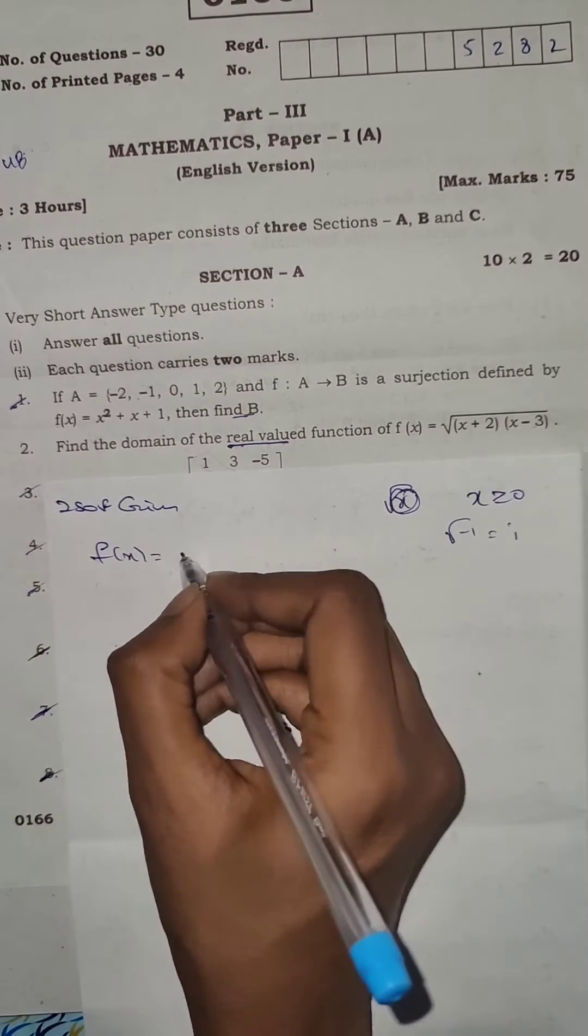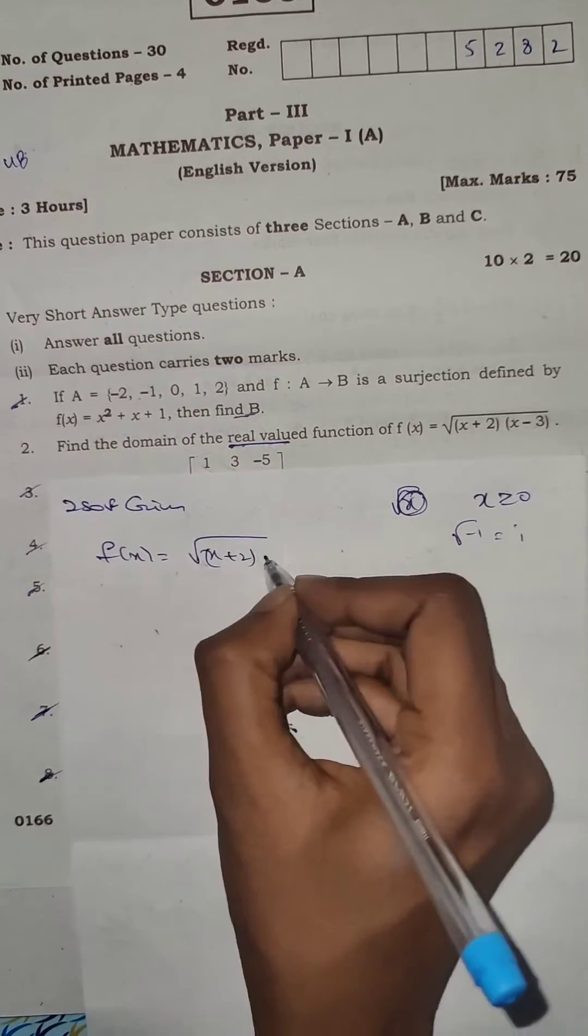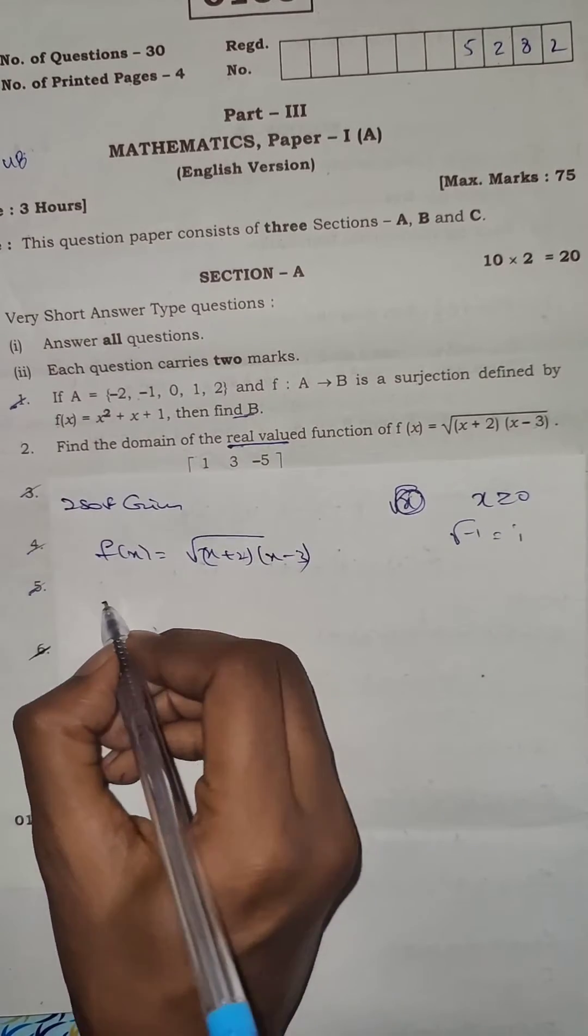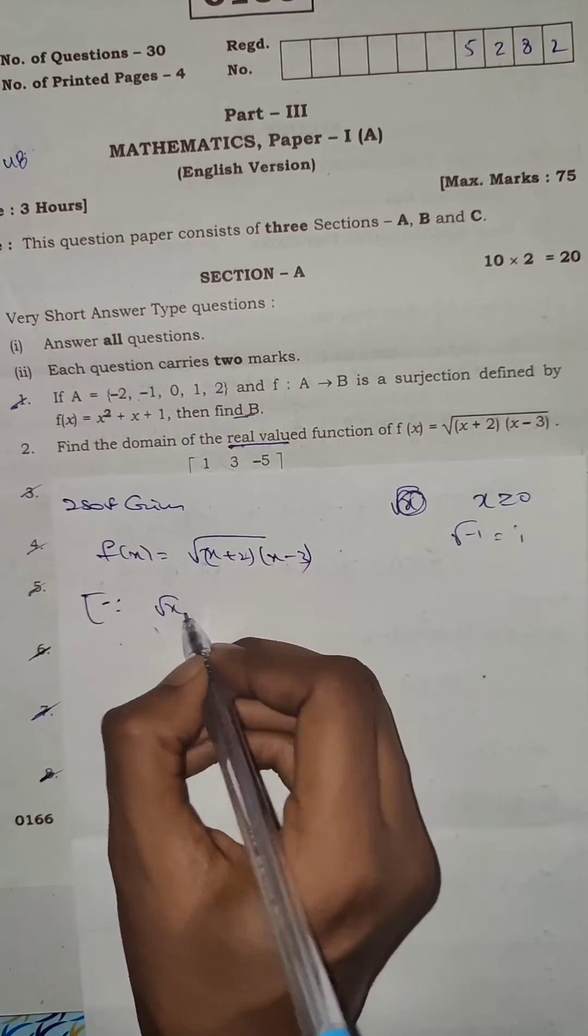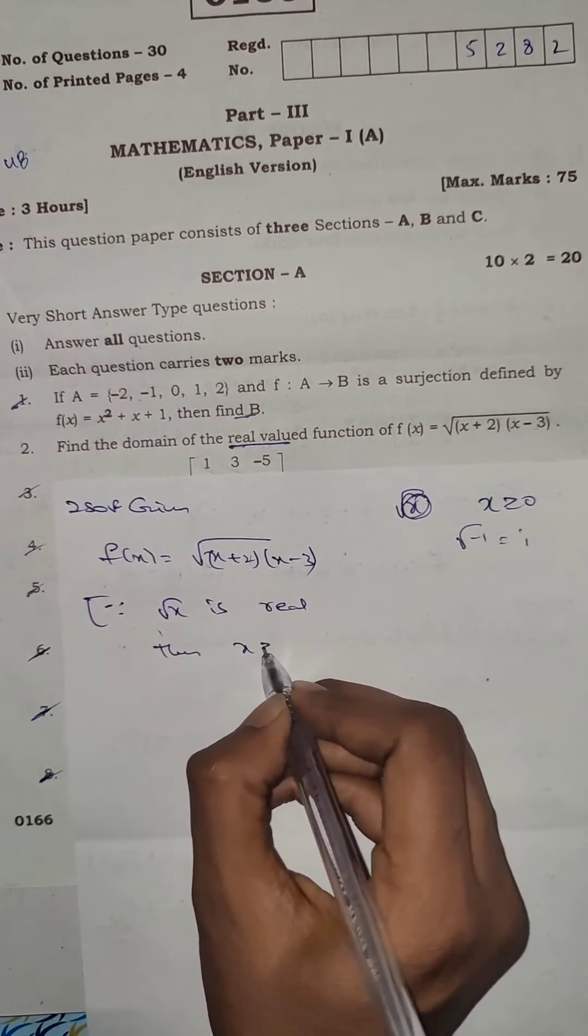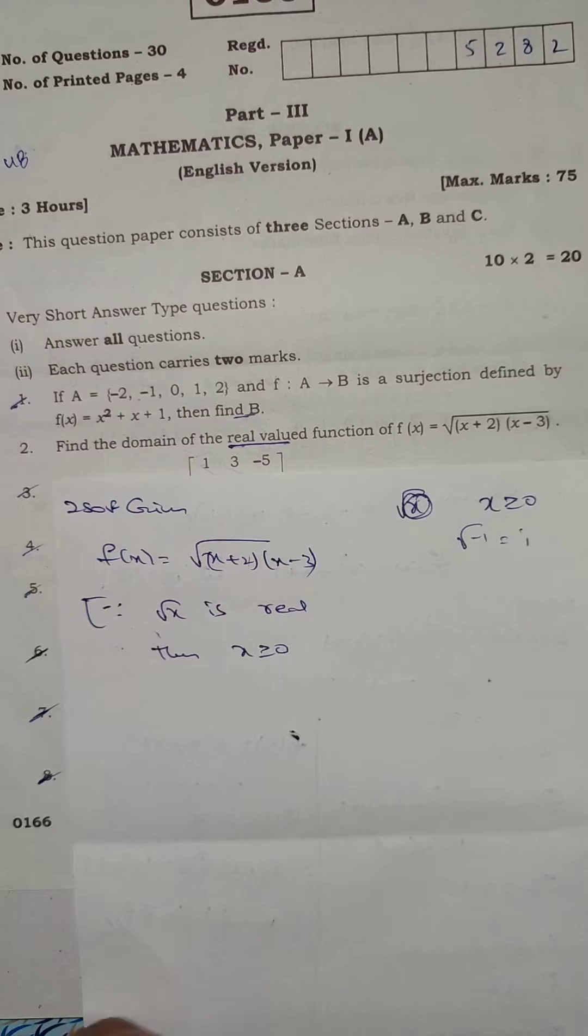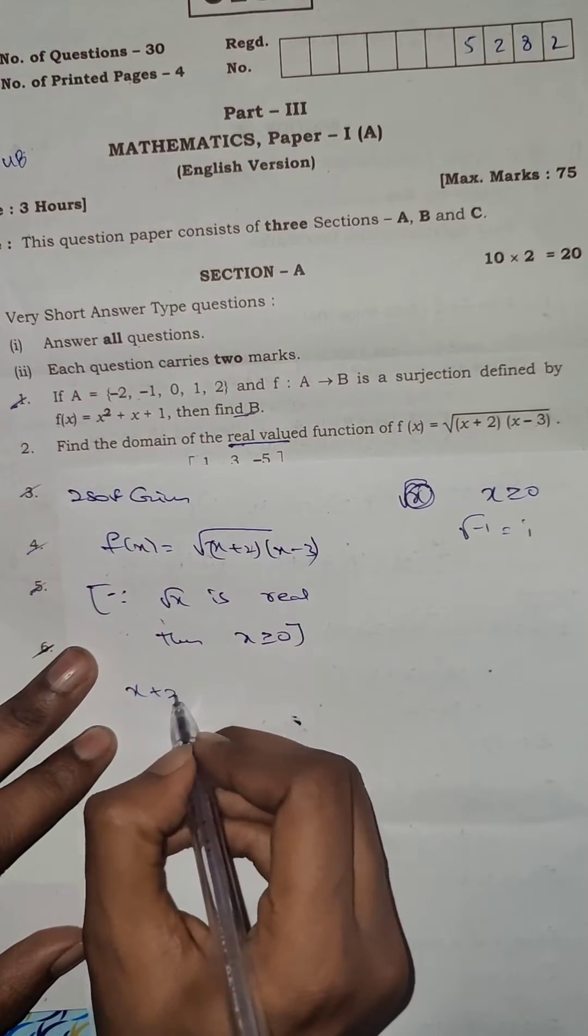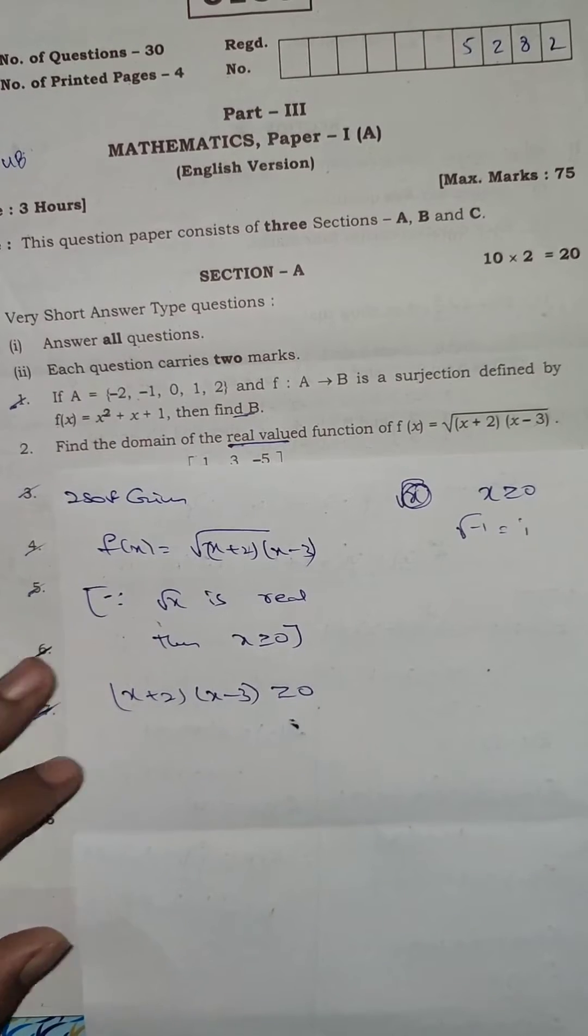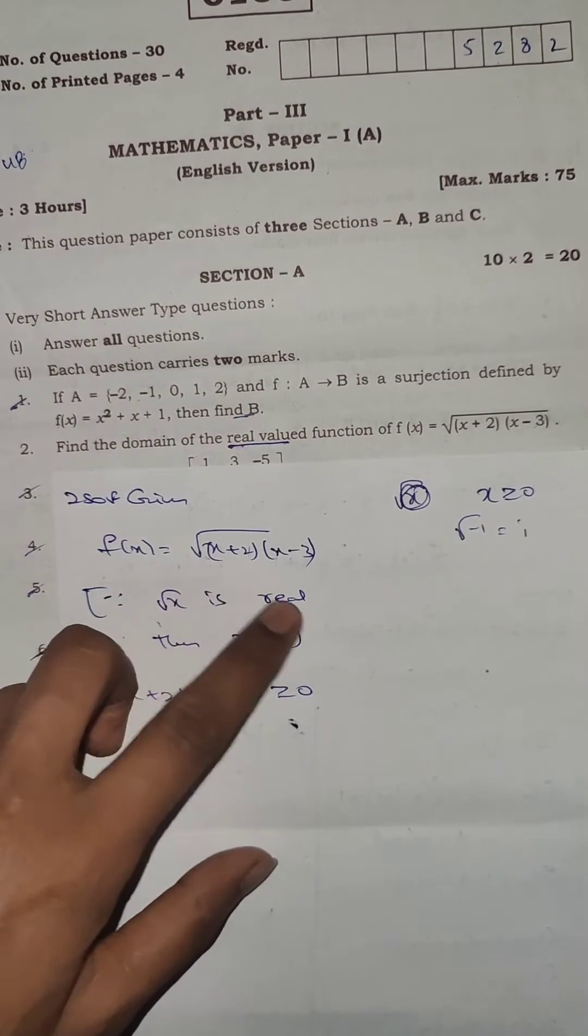Given f(x), root x plus to x minus 3. If you are under root, I will ask the root x is real. Then, x greater than or equals to 0. Now, x plus to x minus 3 greater than or equals to 0. This is it. This is the magic. This is the product of two numbers.